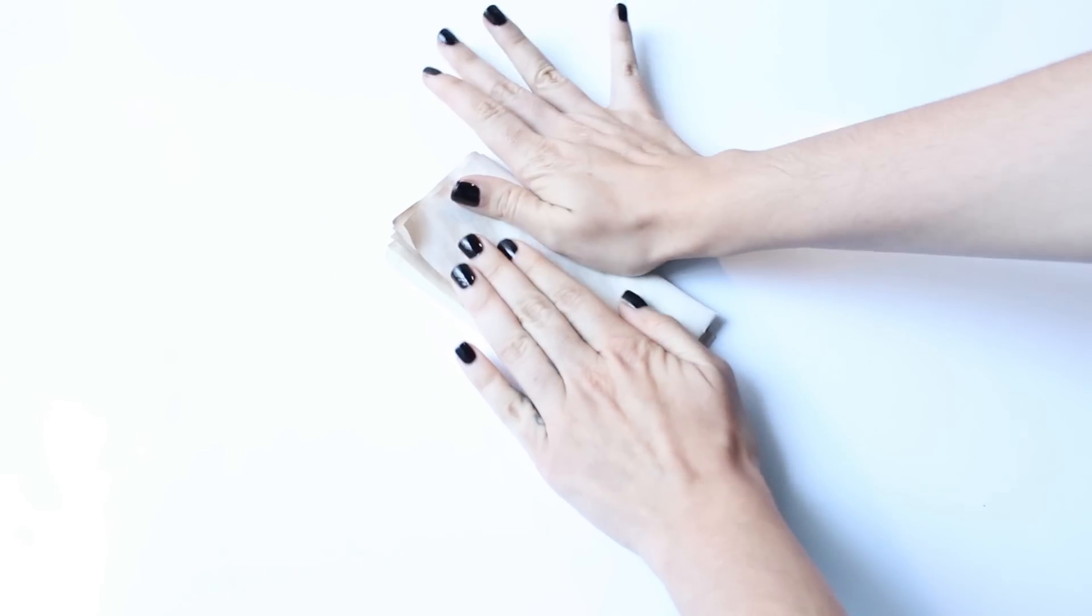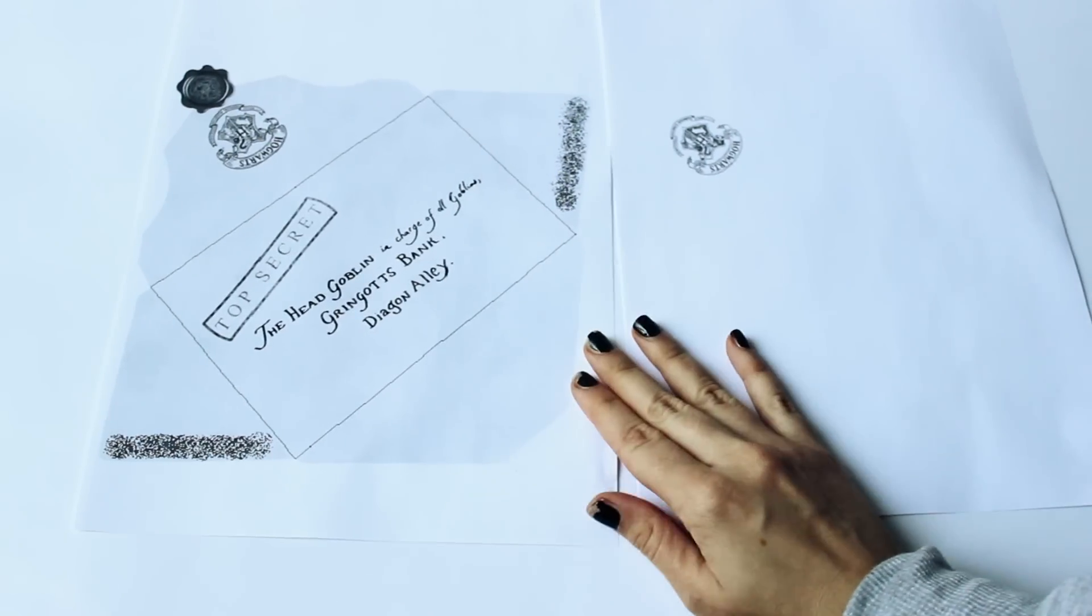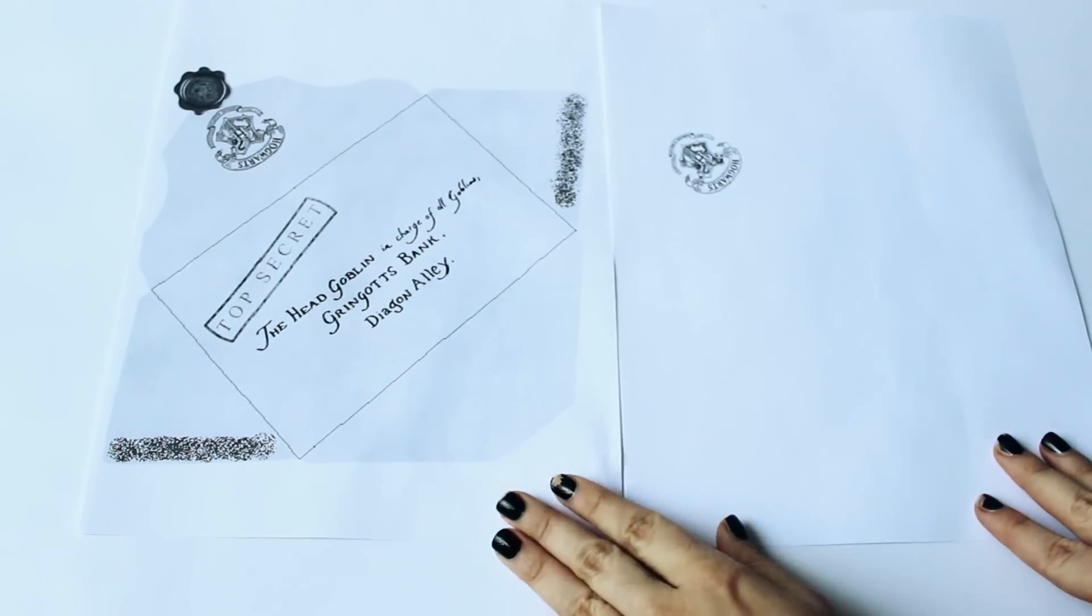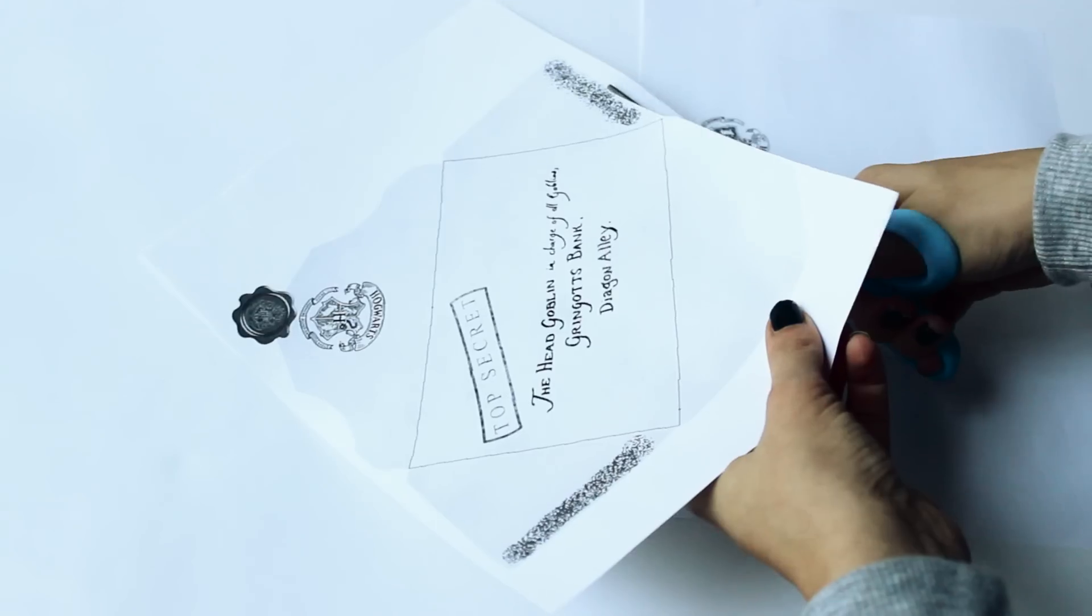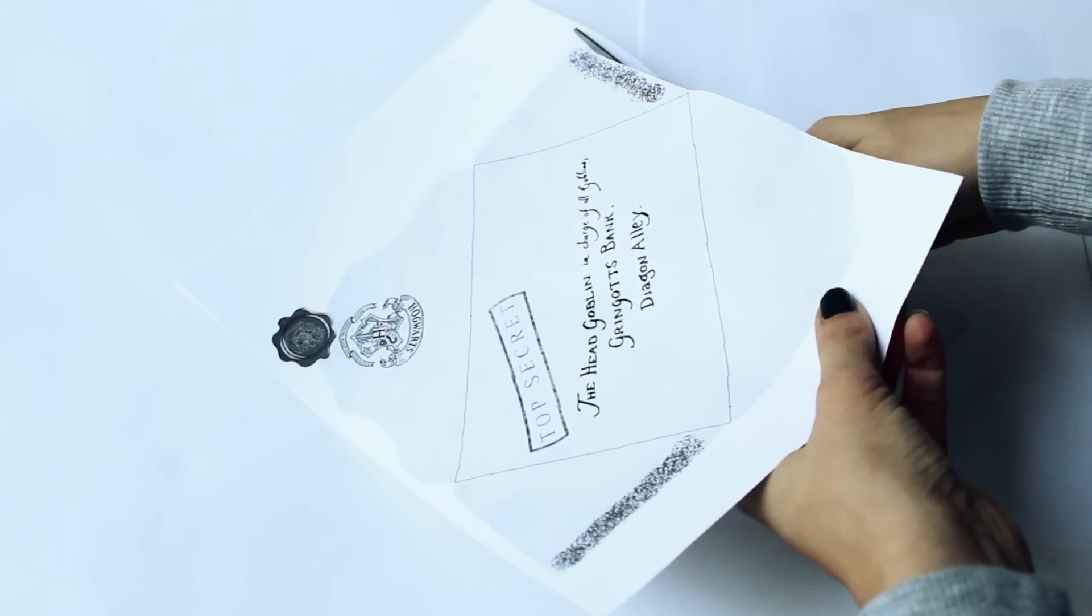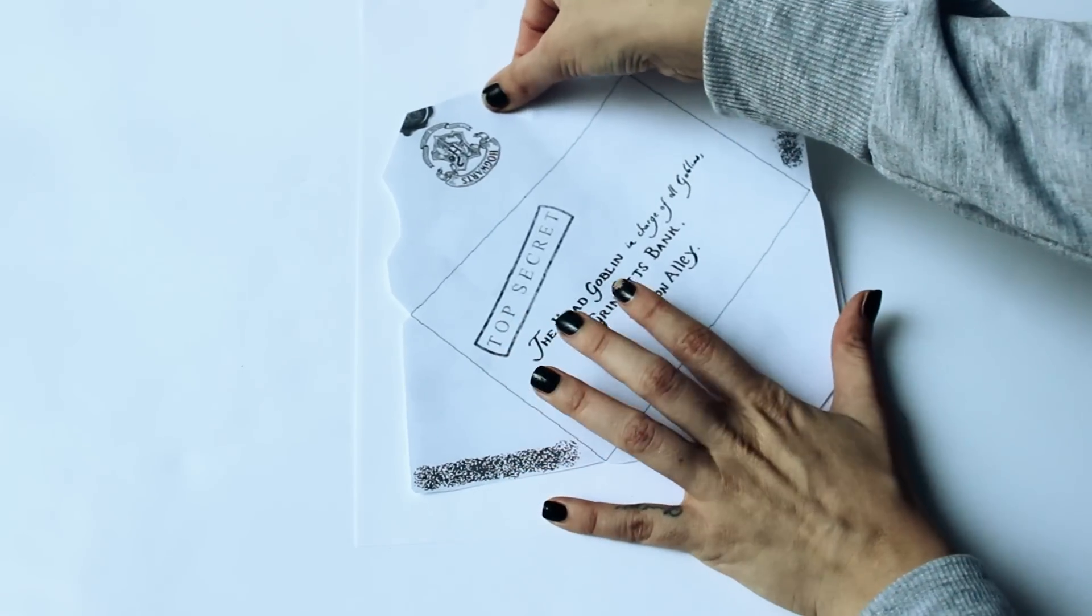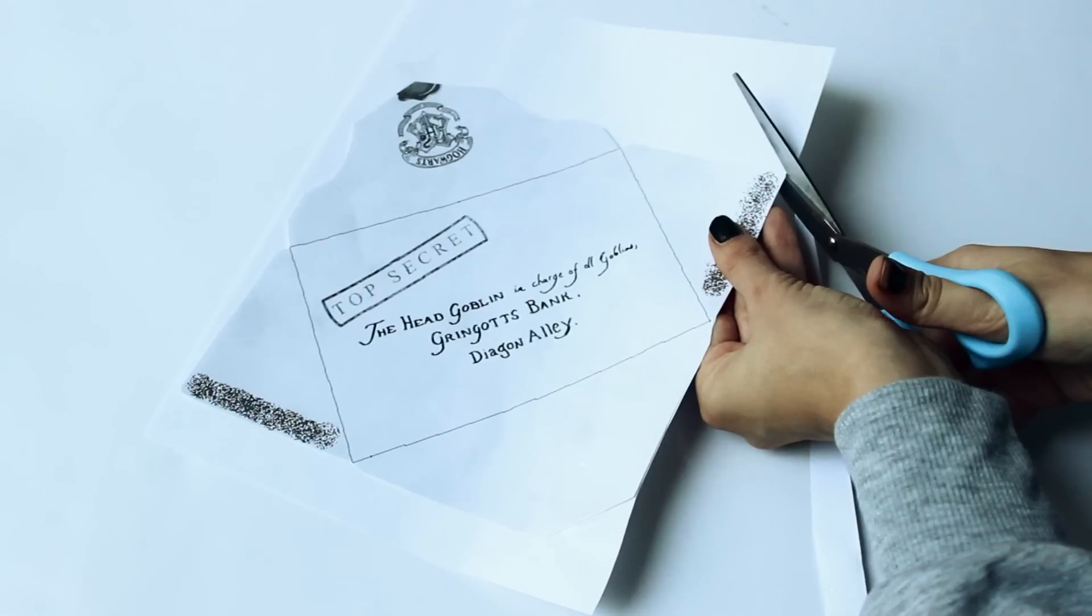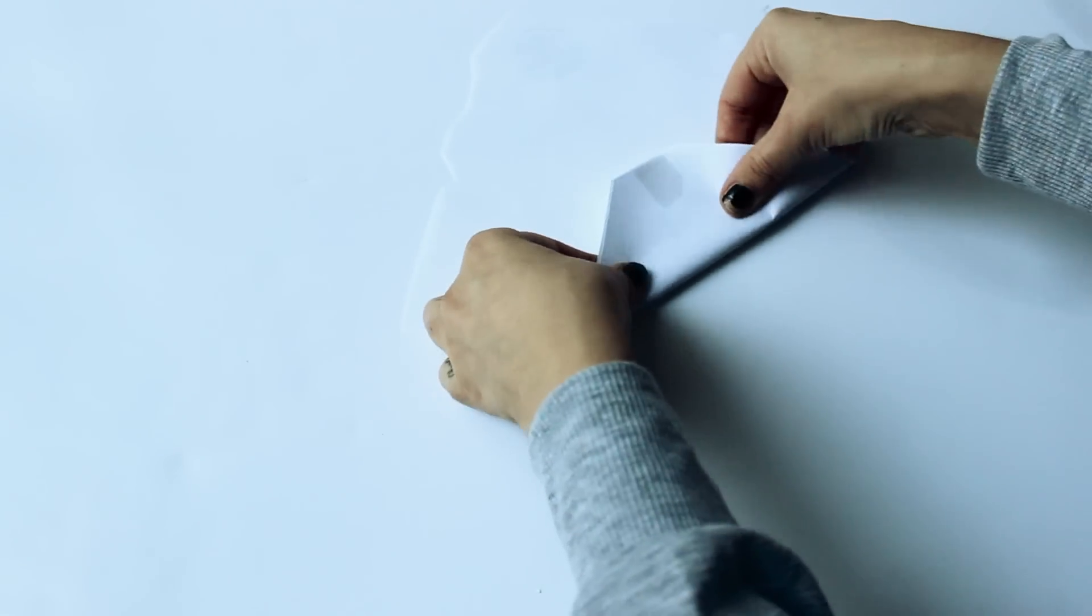Now let's make the envelope. To make the envelope I printed first an envelope template and then just the Hogwarts seal on another piece of paper. I cut out the template, then I put it on top the other piece of paper and I cut out the shape again. I use the template as a guide to fold the envelope.